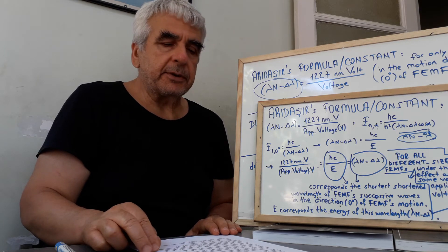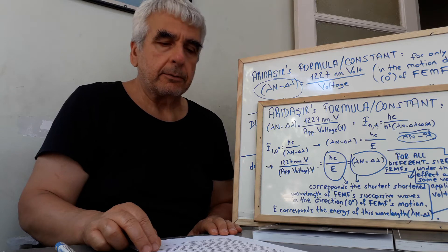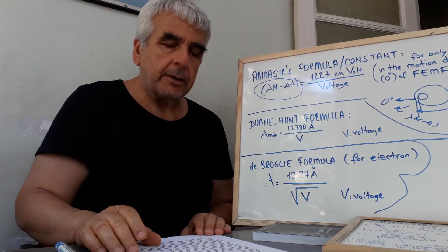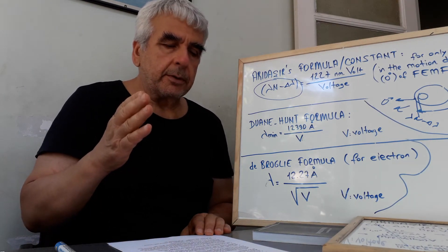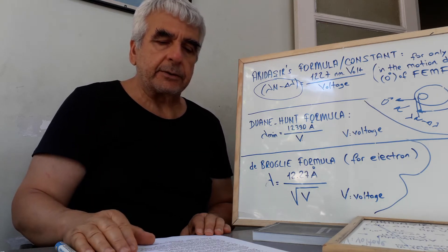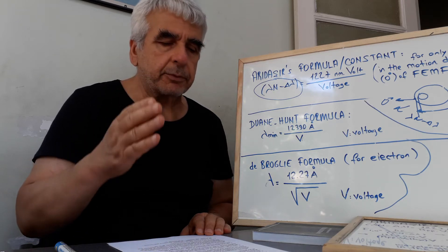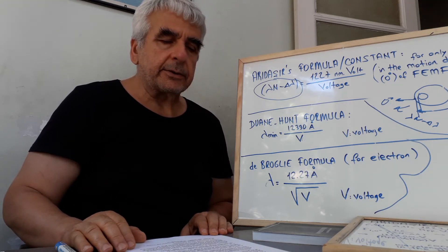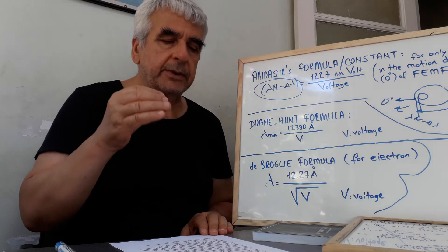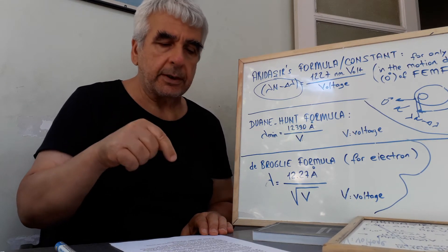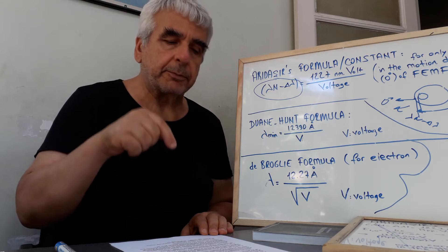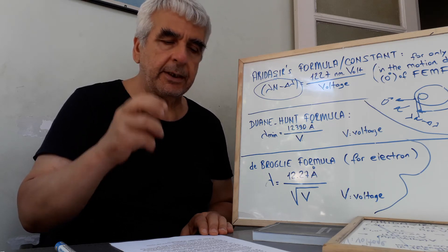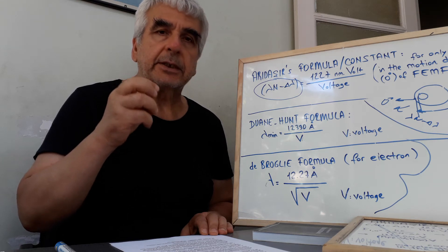Whereas, wrongly, in accepted physics — in Duane-Hunt Law — Lambda-min is directly proportional to electron velocity, and its corresponding energy is inversely proportional to electron velocity. For instance, if electron velocity is zero, if it is stopped by nucleus force, Lambda-min is minimum — that the photon has — which the decelerated electron gives off.